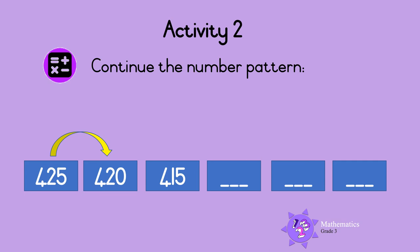Do you see that we take away 5? And we take away 5 from 420 to get 415. This means we are counting backwards in fives. The pattern must continue in the same way.